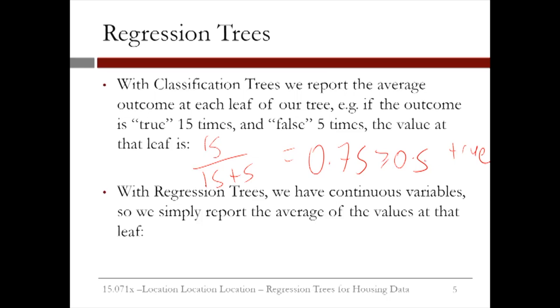With regression trees, we now have continuous variables. So instead, we report the average of the values at that leaf. So suppose we had the values 3, 4, and 5 at one of the leaves of our trees. Well, we just take the average of these numbers, which is 4, and that is what we report. That might be a bit confusing, so let's look at a picture.